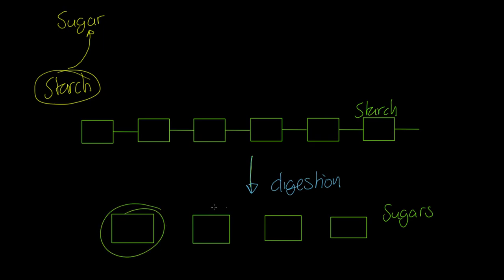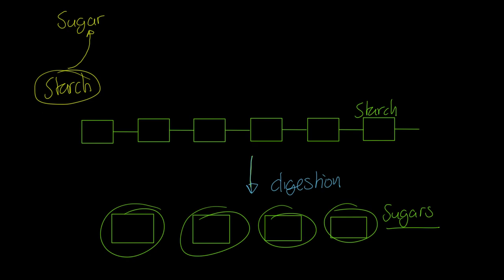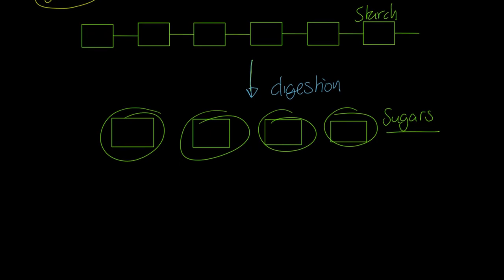And it is these sugars which will be absorbed into the blood and delivered to your cell. So the role of digestion in the mouth, breakdown in the stomach, the absorption of these sugars in the small intestine, the role of this is to break starches down into simple sugars, which can then be passed into the blood and delivered to the different cells of the body. These sugars are actually taken into the bloodstream in the small intestine.